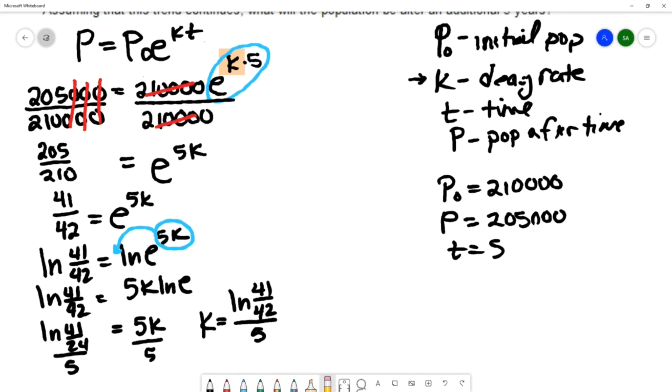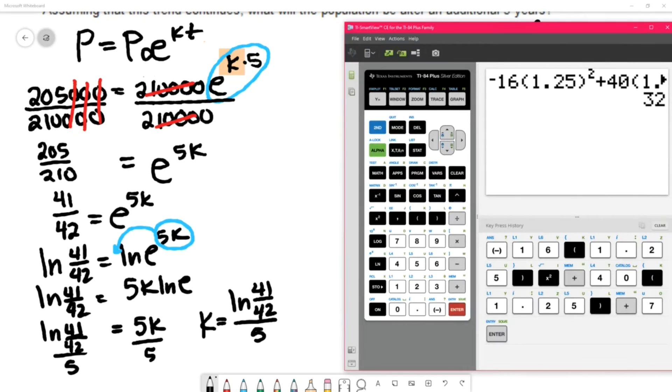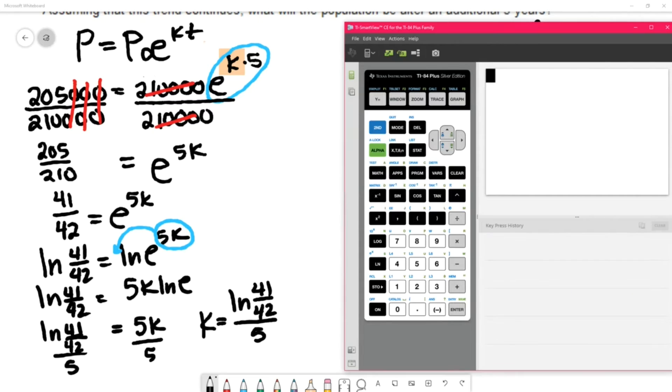Let me make this correction over here—I wrote 24 instead of 42. So we can get a decimal approximation for this value. And you'll see when we do this calculation that this value of k, the decay rate, will be negative. We've got natural log of 41 over 42, and then divide it by 5.